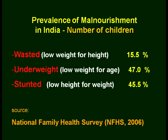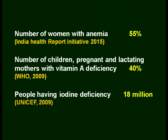Let me mention a few prevalence figures from our country: wasted children — 15.5%; underweight — 47.5%; stunted — 45.5% (National Family Health Survey, 2006). Women with anemia: 55% of women in India are anemic. Children, pregnant and lactating mothers with vitamin A deficiency: 40% according to WHO. Iodine deficiency: 18 million people in our country, according to UNICEF 2000.